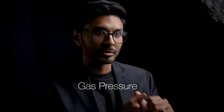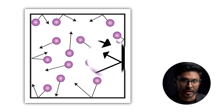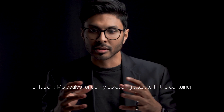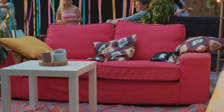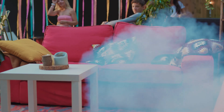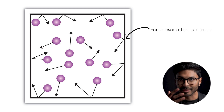Gas pressure comes from gas molecules moving rapidly and colliding with the walls of a container. The movement is random, and we call this diffusion — where they spread apart and fill the container. For example, imagine you're in bed and your partner farts; that fart moves from an area of high concentration just outside to fill the entire room at a much lower concentration. That's the fart diffusing.